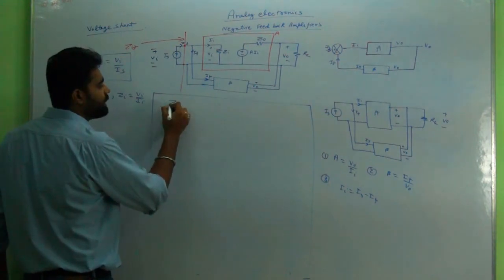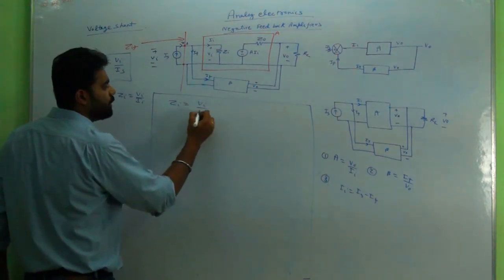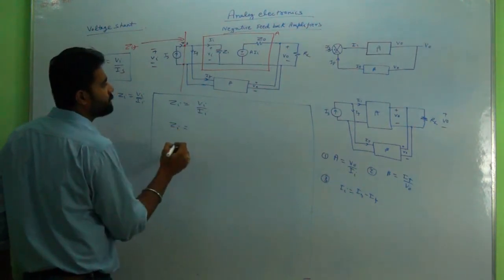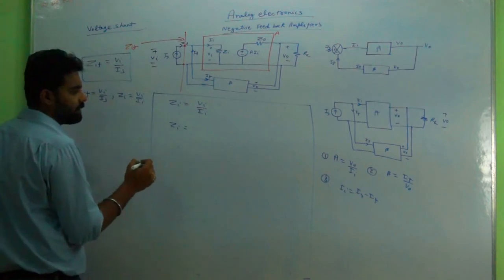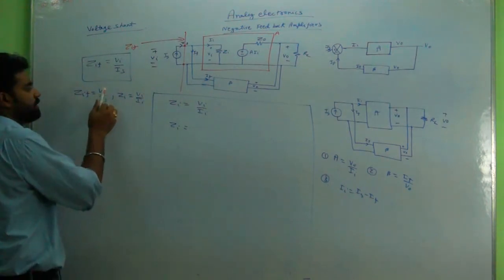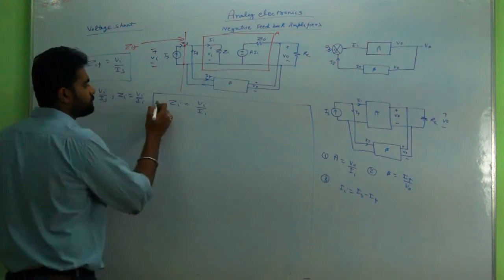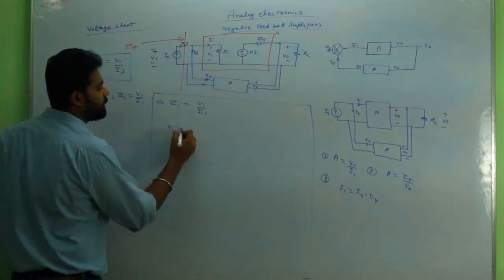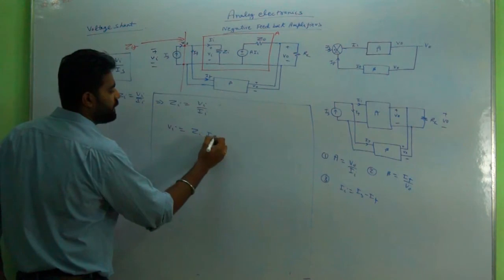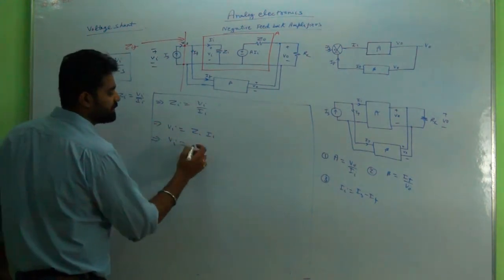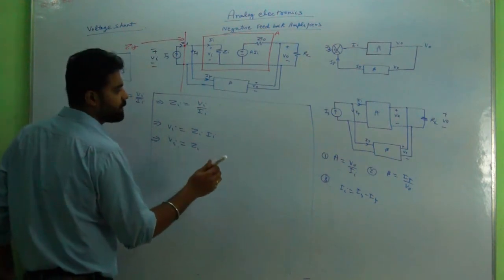ZI equal to VI upon II, so ZI can be written as VI upon II. Now what has to be derived - VI has to stay II. So VI can be written as ZI into II.